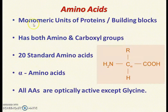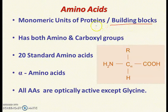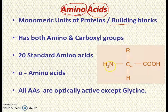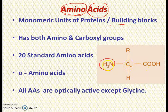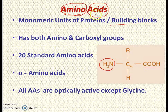Let's see the definition of amino acids. Amino acids are monomeric units of proteins — these are the building blocks of proteins. That means proteins are made of small units called amino acids. As we see the term 'amino acids,' amino acids contain both an amino group as well as an acid group. See the general structure here: C, H, NH2, COOH, and R. In this general structure you can see the amino group as well as the carboxyl group — that is why they are called amino acids.